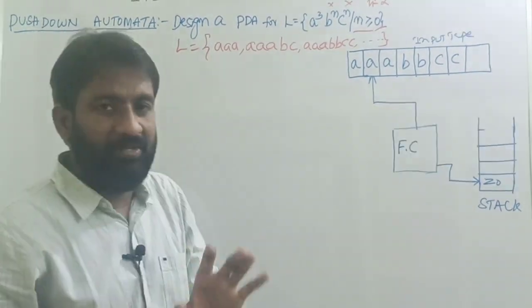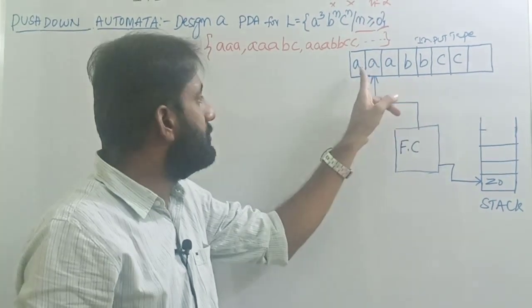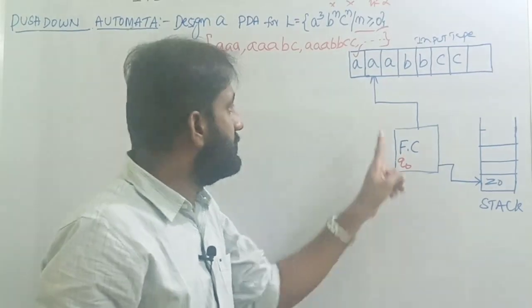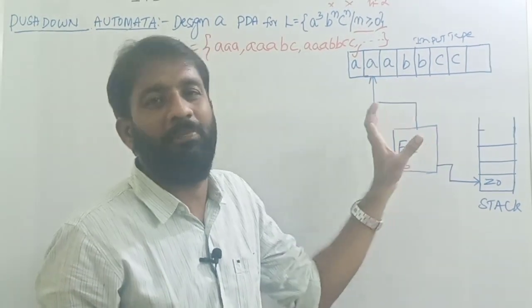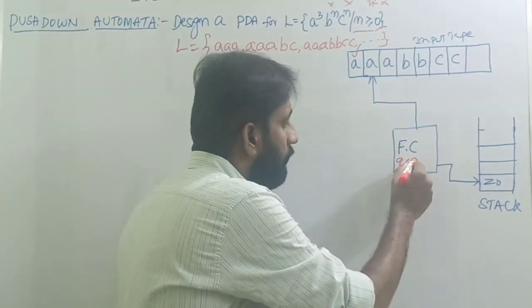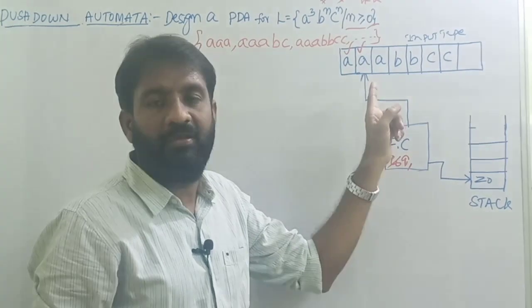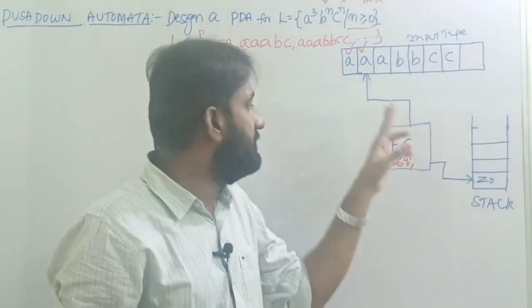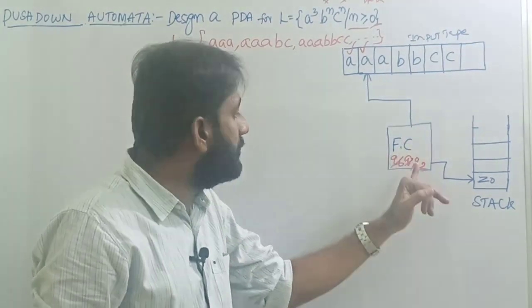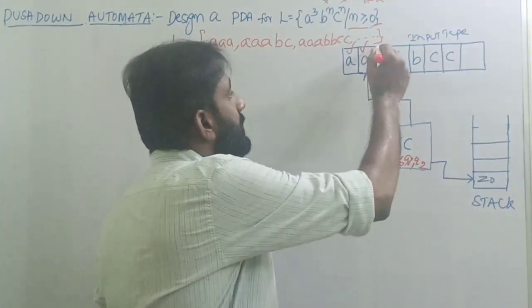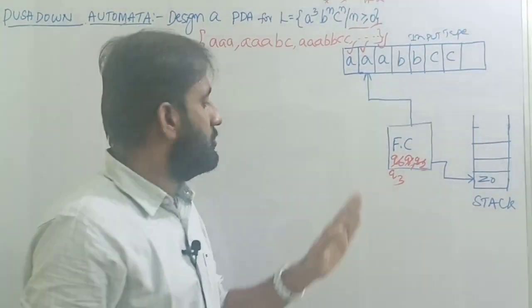Let's discuss the logic. Every string definitely has three A's. Taking the example string triple A, double B, double C: first, read A on the initial state Q0 — no push or pop operation on the stack, just change from Q0 to Q1. This ensures only one A is read. Then read the next A, change from Q1 to Q2 without any stack operation — Q2 ensures two A's are read.